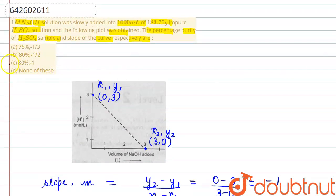So if we go and check the options, slope was minus one and the percentage purity is 80 percent. From here the answer would be option number C: 80 percent, minus one. I hope you understood it, thank you.